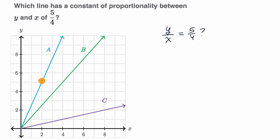So let's first try line A right over here. Let me find a point that sits on it. So that looks like a point that sits on it. And so if I take, this is the point two-comma-five. And so if I took y divided by x, I would get a constant of proportionality as five-halves. So A is not going to be our answer.